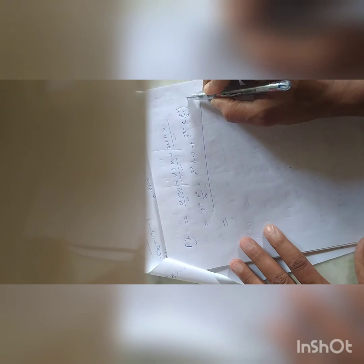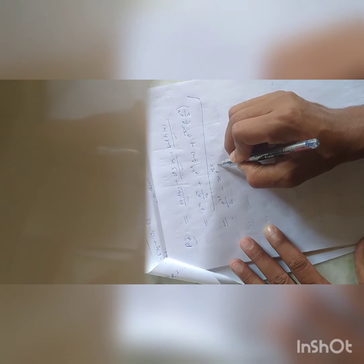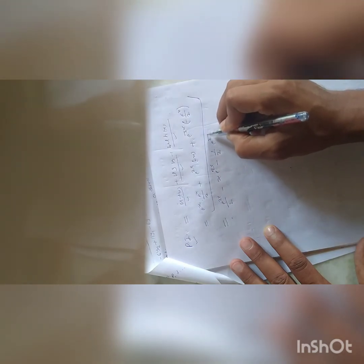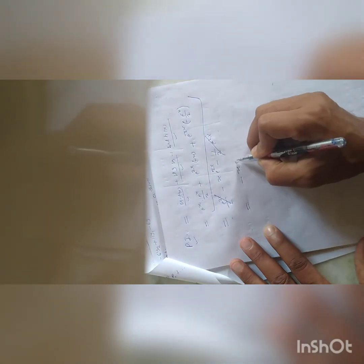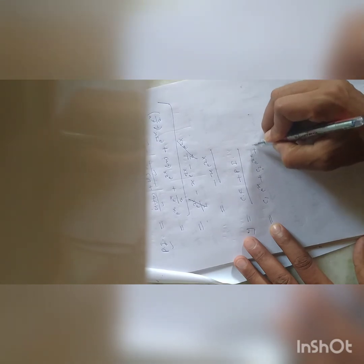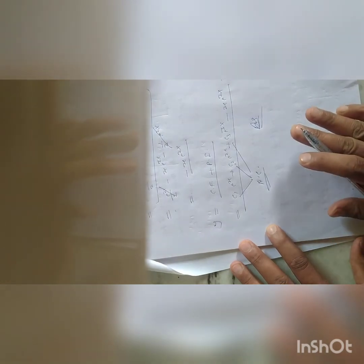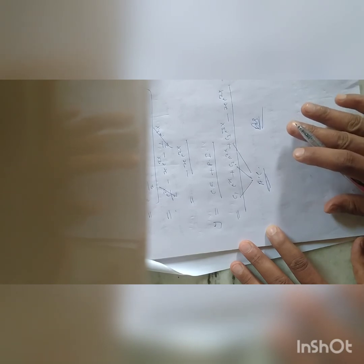Solving the particular integral: e^(2x)/2 - x·e^(2x) - e^(2x)/2. The first and last terms cancel, giving PI = -x·e^(2x). Therefore, the general solution is: y = c1·e^x + c2·e^(2x) + c3·e^(3x) - x·e^(2x), where c1, c2, c3 are arbitrary constants. This is the complete solution using the variation of parameter method for third order differential equations. Thank you.